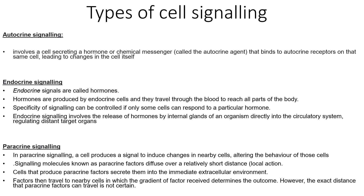Paracrine signaling involves a cell producing a signal to stimulate changes in nearby cells, altering the behavior of those cells. These signaling molecules, known as paracrine factors, can move over a short distance via diffusion. The cells which produce paracrine factors secrete them into the immediate extracellular environment. These factors can then travel to nearby cells, where the gradient of factor received determines the outcome. Therefore, the exact distance that paracrine factors can travel is not fixed.